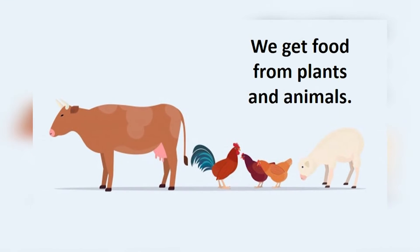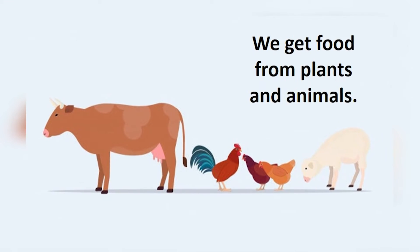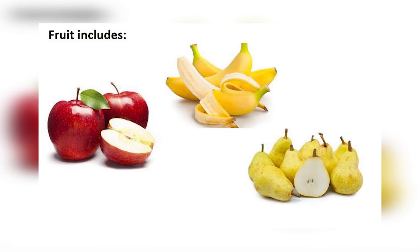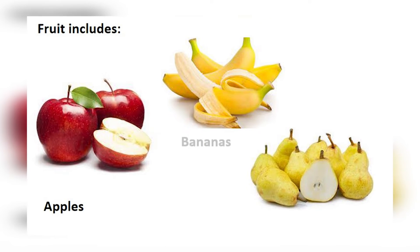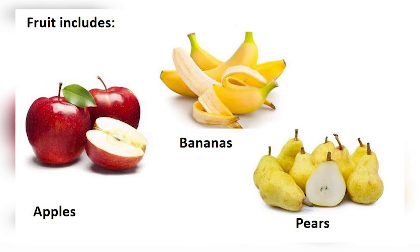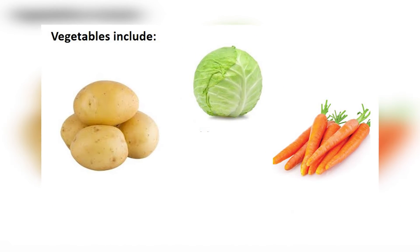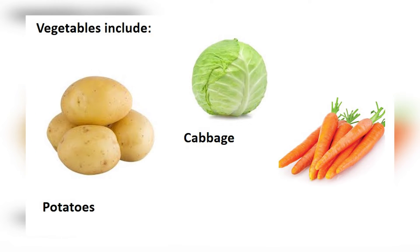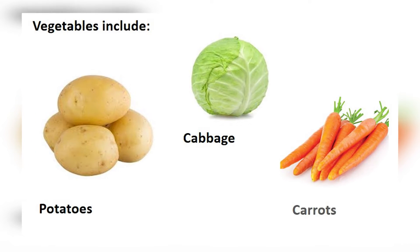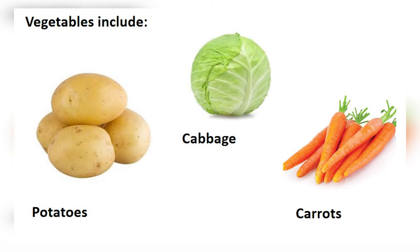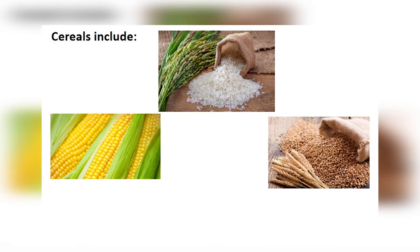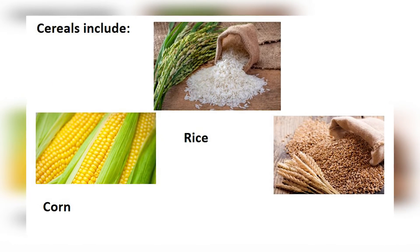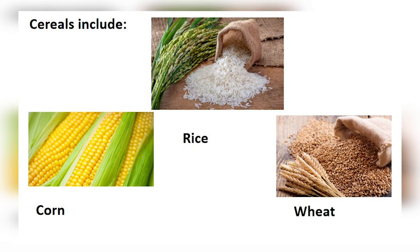The food we get from plants includes fruits, vegetables, and cereals. Fruits include apples, bananas, and pears. Vegetables include potato, cabbage, and carrots. Cereals include corn, rice, and wheat.